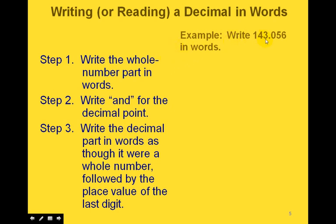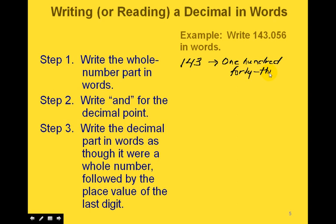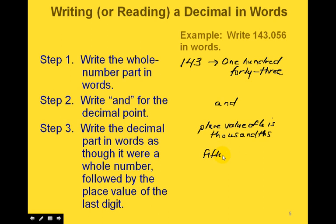Our first step is to take the whole number part and write that in words. Looking at the part to the left of the decimal point, we have 143. Where the decimal point is, we write 'and.' Then we look at the part to the right of the decimal point, say it as though it were a whole number, and follow it by the place value of the last digit. The place value of the 6 is the thousandths place, so we have 56 thousandths. So the full decimal written in words is: one hundred forty-three and fifty-six thousandths.